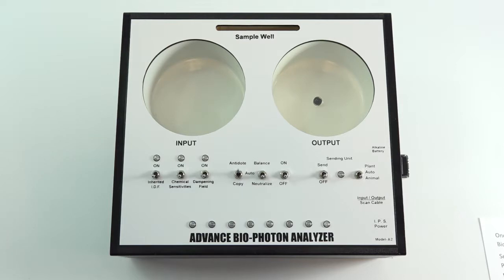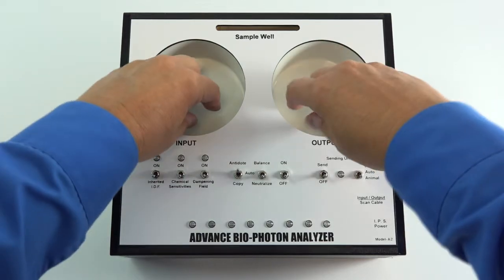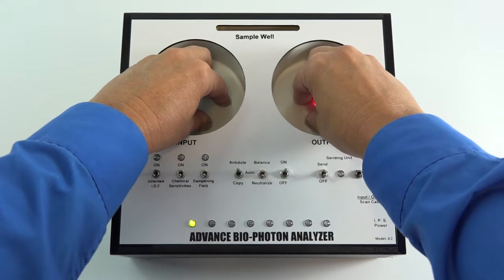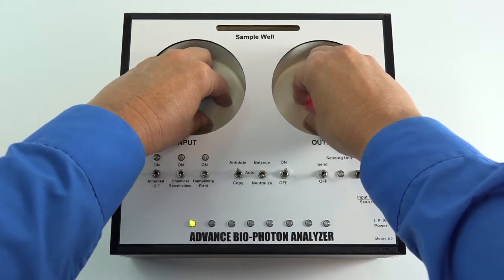Then place the fingers of the left hand in the input well and the fingers of the right hand in the output well, then turn on the ABPA.